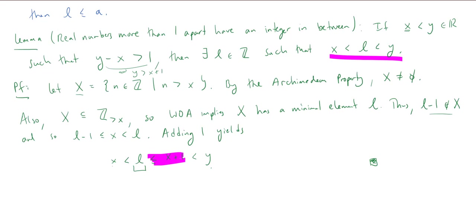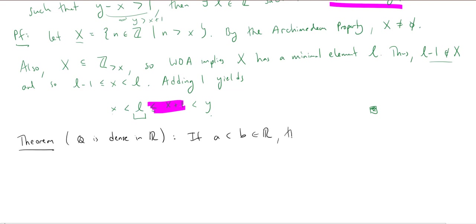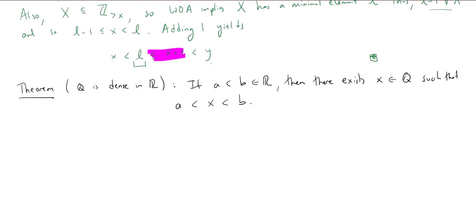So that's the lemma — we want to use it to prove something bigger. The theorem is that the rational numbers, the set of rational numbers, is dense in the real numbers. If I take any two real numbers a less than b, then there exists a rational number x such that x is strictly between a and b. You can always find rational numbers between any two real numbers.